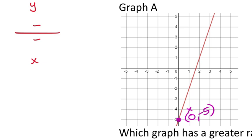In my slope formula x goes on the bottom, so I put 0 there first. The y-value of negative 5 goes on the top. That represents one ordered pair, but I need another. For graph A, I could use any of several points and get the same slope because it's a straight line.